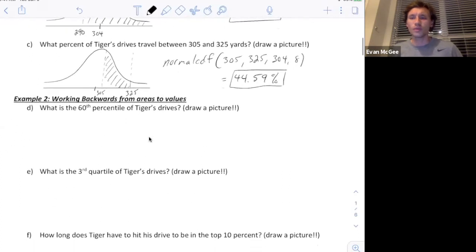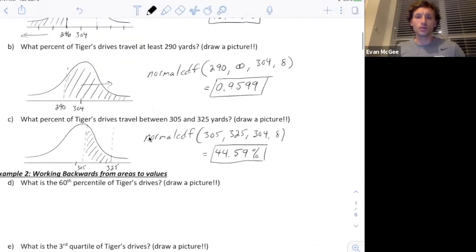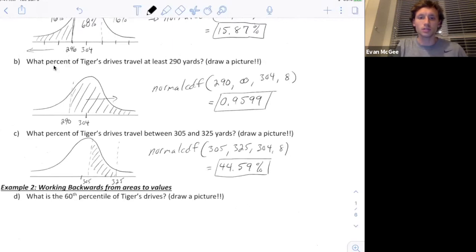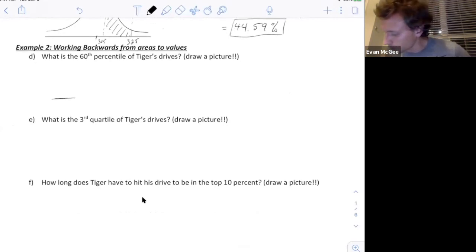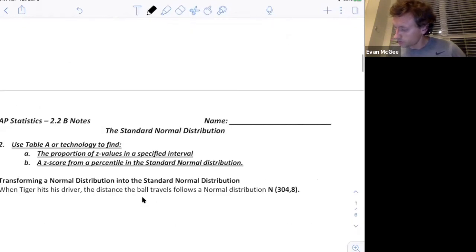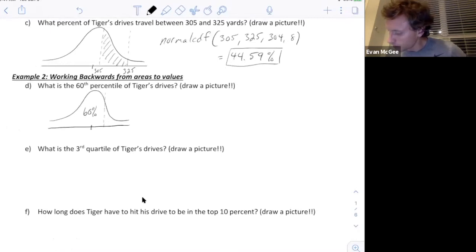Now let's look at what we call working backwards. For each of these problems, they told us a value and asked us to find an area or a percent. Here they're going to ask us something different. What is the 60th percentile? Now they're giving us a percentage and they want us to tell what the percentile or the drive length is. Still sketch a picture. If it is the 60th percentile, then it's going to be above the mean. We're going to have 60% here. We want to know what is the x value that is the 60th percentile.